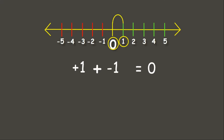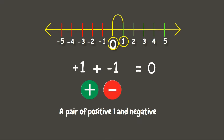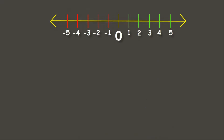Now let's answer this using counters. We have one positive and one negative. We need to remember that a pair of positive 1 and negative 1 is equal to 0. Therefore, we simply cancel them and we get 0.